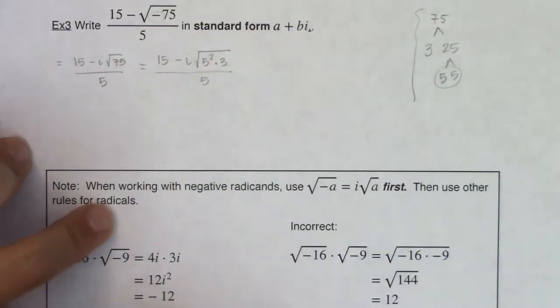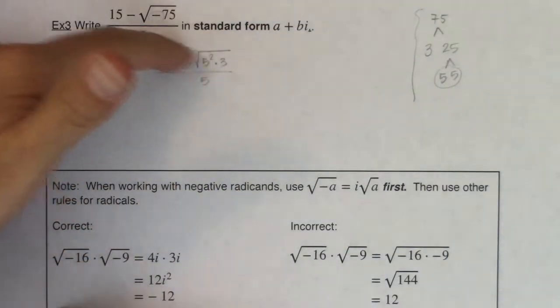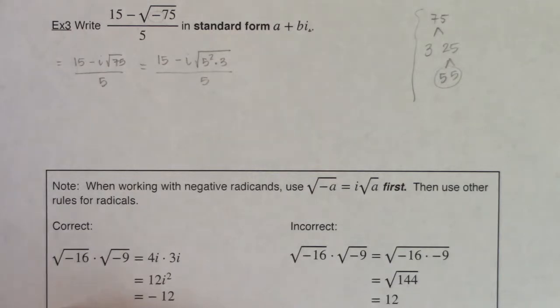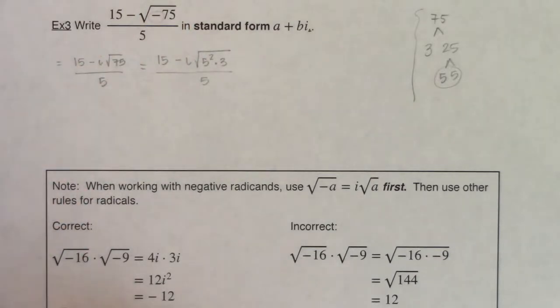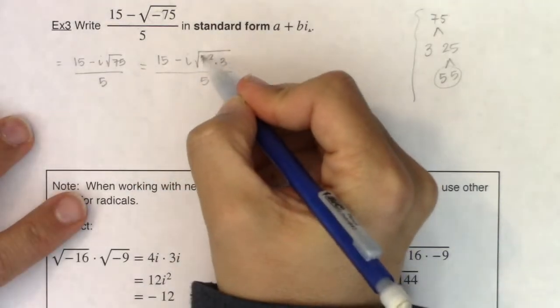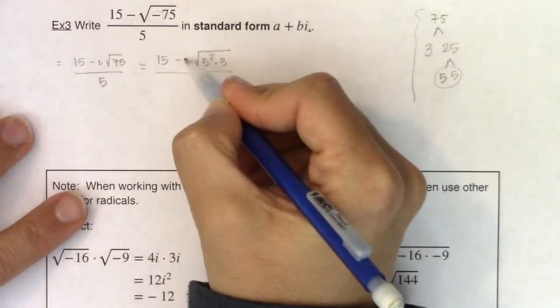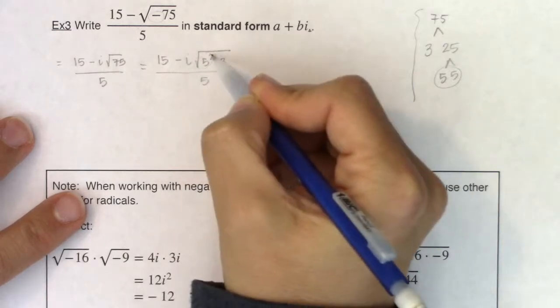And again the way I'm approaching this particular write-up is I'm just simplifying the numerator first and then I'll bunny ears or alien ears the fraction. You could have alien-eared the fraction first and then simplified the imaginary part of this expression. Okay so I see you've got a pair of 5s. It's going to come out of the radical as a 5 and again the operation will be multiplication.